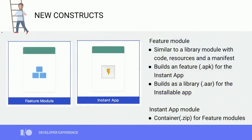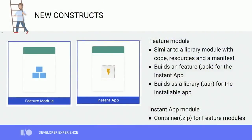We've introduced a new construct called the feature module. The feature module is very similar to a library module in that it contains code, resources, and a manifest. But feature modules build as APKs for your Instant App. Our Gradle plugin will automatically build them as libraries for your installable app, so you can use the exact same code base.